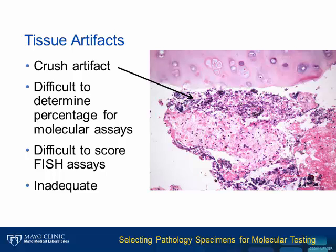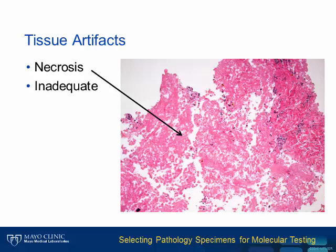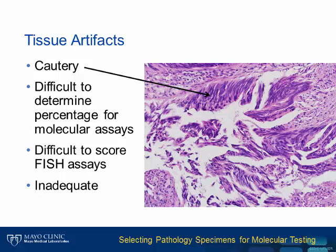Crush artifact is another issue — not so much because of what it does to the DNA or the PCR reaction, but because it makes it difficult to determine tumor percent, making it difficult to determine if the specimen is adequate. For FISH assays, this can be problematic, as it is difficult to define the area of individual nuclei in order to count signals. Generally, crush tissue is inadequate for testing. For necrosis, the effect is somewhat variable and depends on how much of the tissue is necrotic. A small focus of necrosis is usually acceptable, while extensively necrotic tissue is inadequate. In this case, the issue affects the quality and quantity of the nucleic acid that can be obtained. Cautery is another artifact that makes it difficult to determine tumor percent and is problematic to score FISH signals. Additionally, DNA obtained from such a specimen generally does not amplify well and would be considered inadequate.